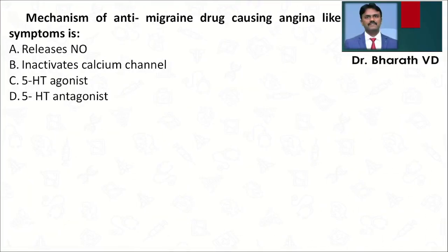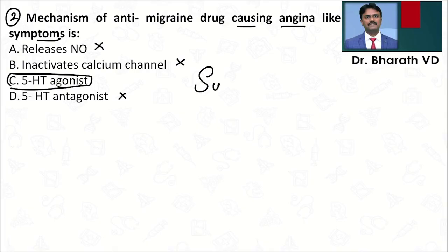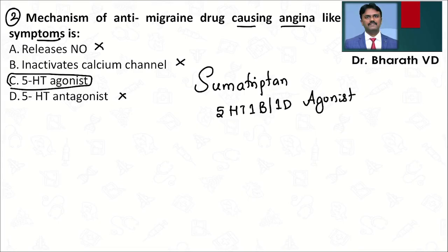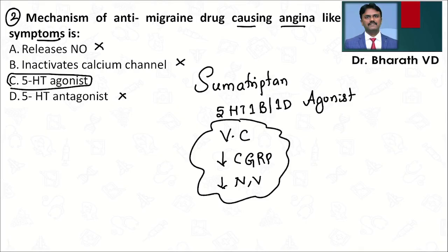Moving to the second MCQ: the mechanism by which an anti-migraine drug causes angina-like symptoms. The answer involves 5HT1B/1D agonism. The drug is sumatriptan — triptans are 5HT1B/1D agonists. Because of this agonism, they cause vasoconstriction, decrease CGRP, and decrease nausea and vomiting. These three advantages make sumatriptan the drug of choice for acute attack of migraine.